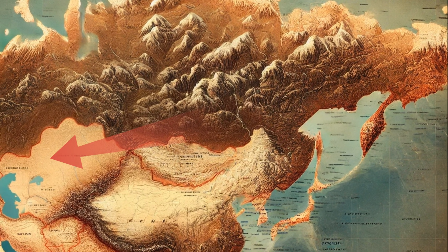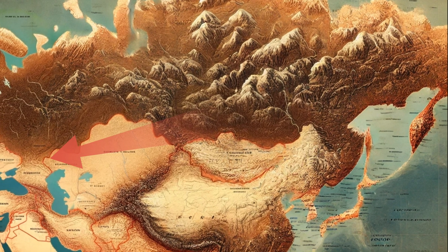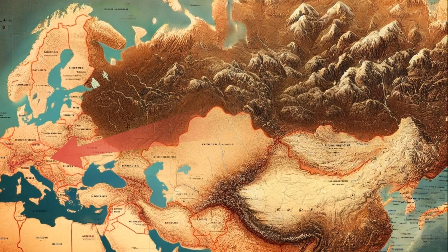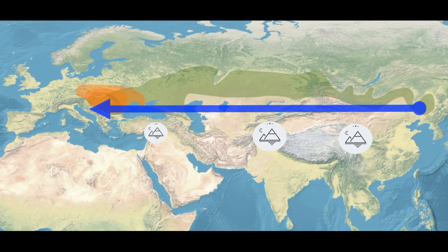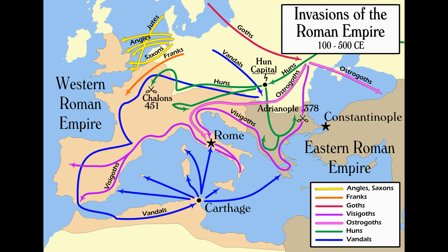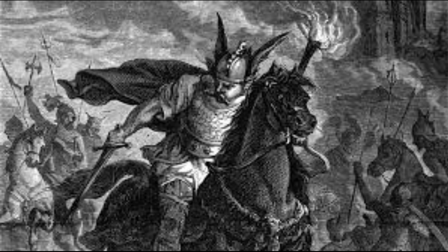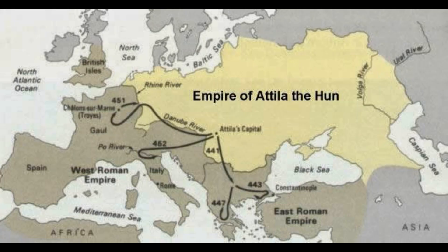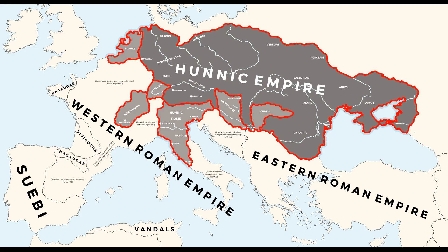The region known as the heartland, encompassing vast areas of Eurasia, has been the cradle and battleground of some of history's most formidable empires. One of the earliest examples came from the Huns, a nomadic people originating from the Central Asian steppes, who expanded westward towards the Roman Empire in the 5th century. Under Attila, the Huns developed a fierce style of warfare characterized by rapid mobility and cavalry tactics, challenging Roman defenses. The advance of the Huns demonstrated the strategic advantage of the heartland, as its geographic position enabled swift movement toward the west and access to essential resources to sustain prolonged campaigns.